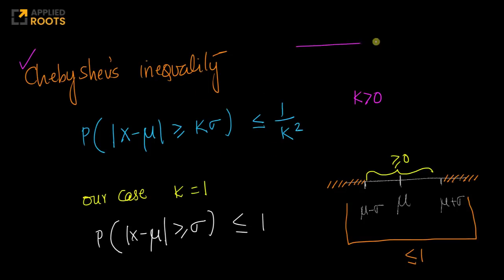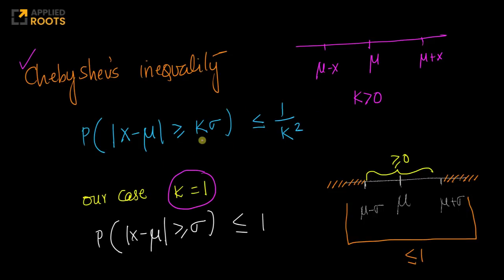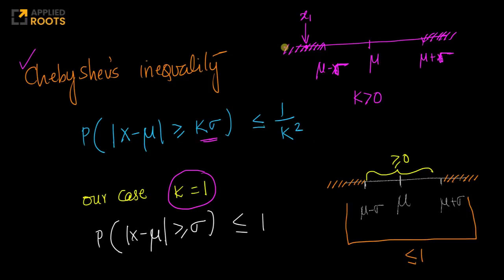If you visualize this geometrically on a number line, with mu minus sigma on the left and mu plus sigma on the right, and we take k equals 1 (since we care about one standard deviation away), then the inequality tells you: the number of values lying in the region to the left of mu minus sigma and to the right of mu plus sigma combined — that probability is less than or equal to 1/k². Plugging in k equals 1, this becomes: the probability of observing points more than one standard deviation away from mean is less than or equal to 1.